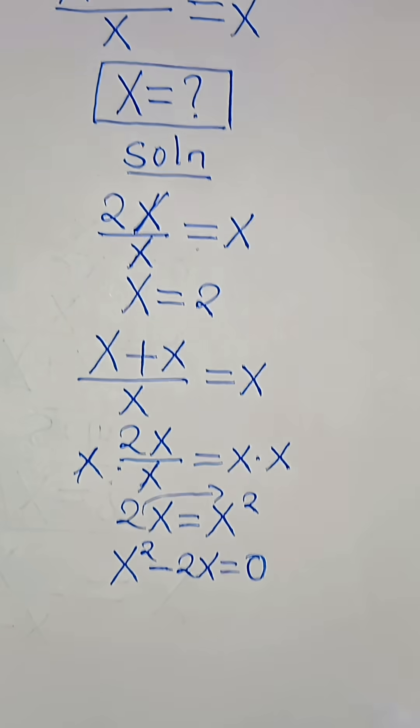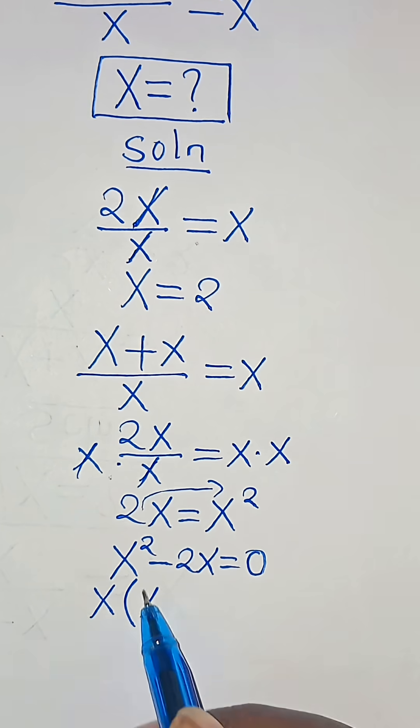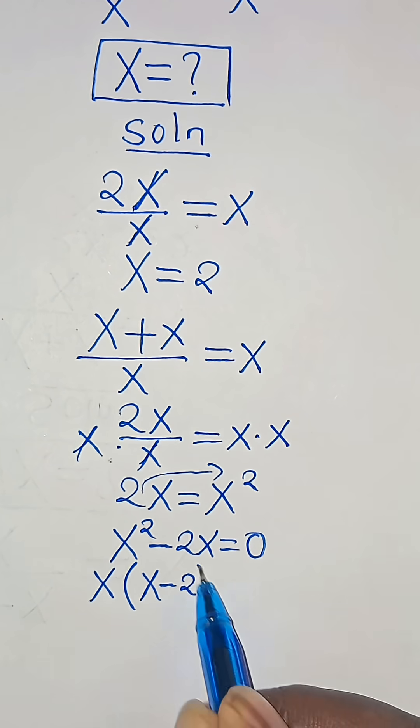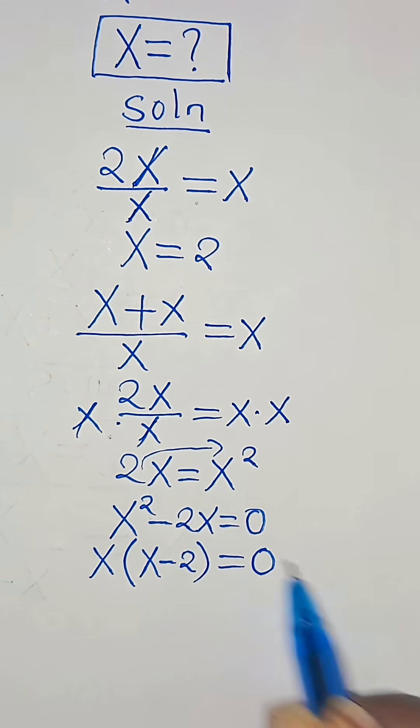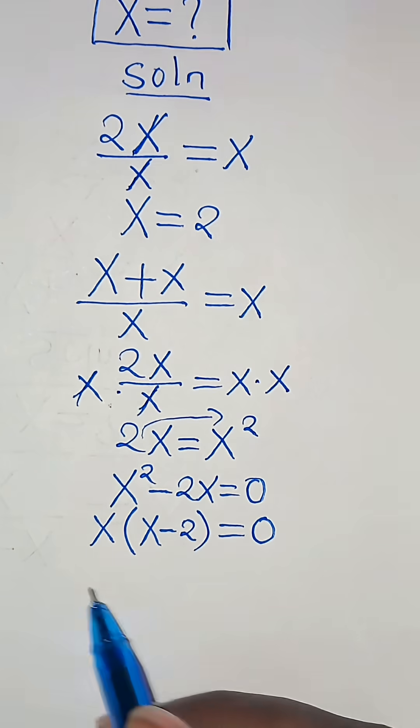So this means that x is common here. We can factor out x into the parentheses, this is x minus 2, and this is equal to 0. So this implies that we have got two parts here, we have x.